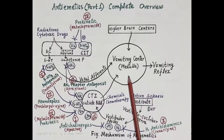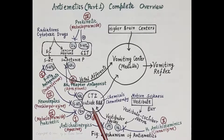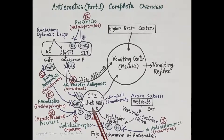The vomiting center is located in the medulla oblongata, that is the brain stem. Closely associated with the vomiting center is a chemoreceptor trigger zone located outside the blood-brain barrier. This chemoreceptor trigger zone is easily stimulated by emetogenic substances.